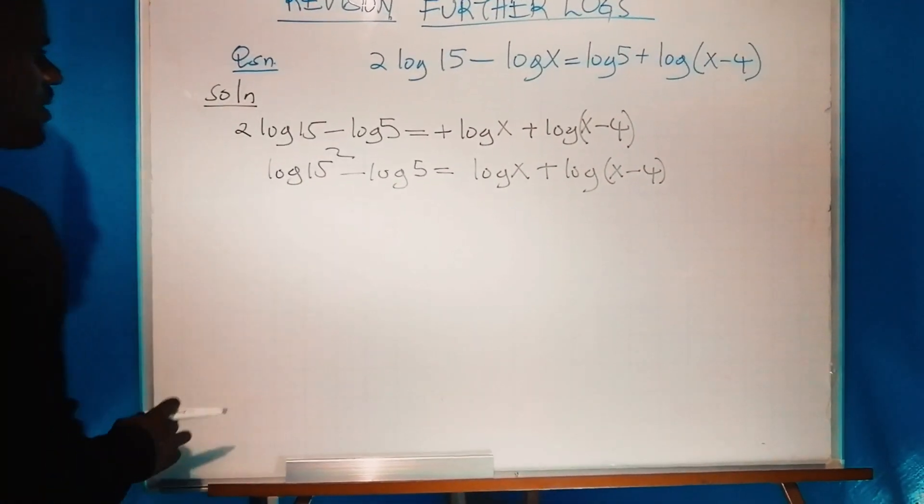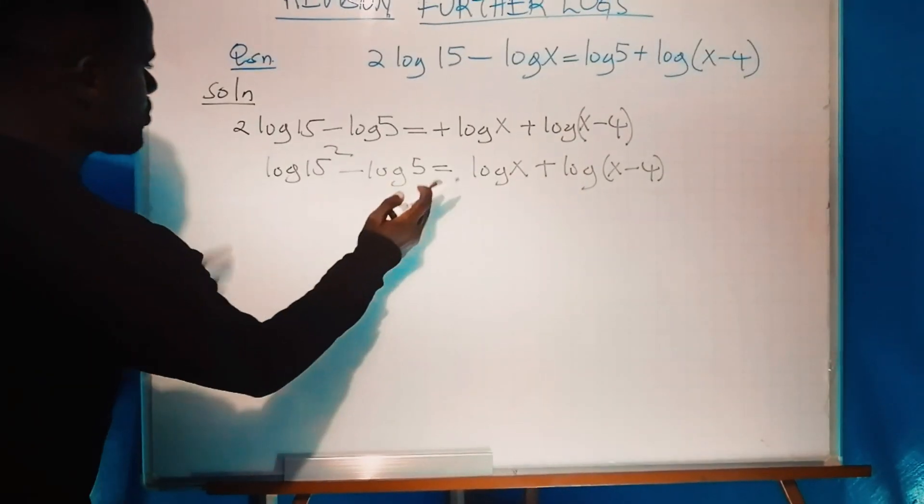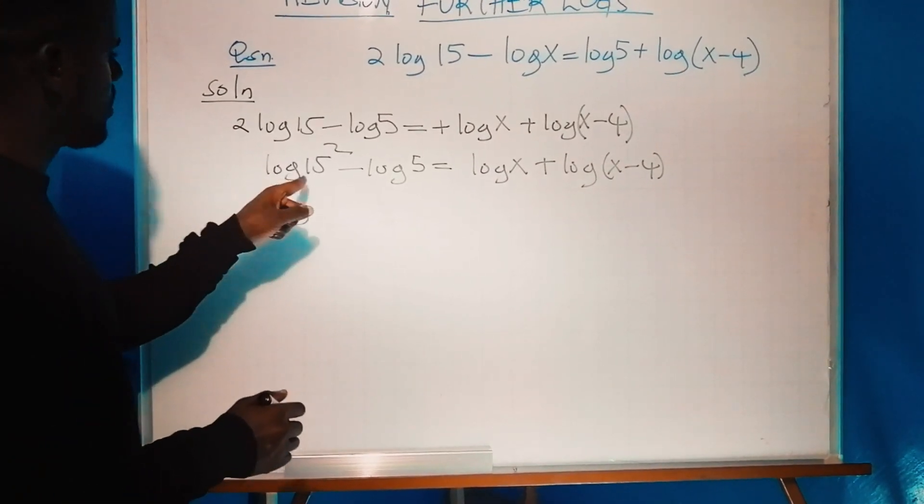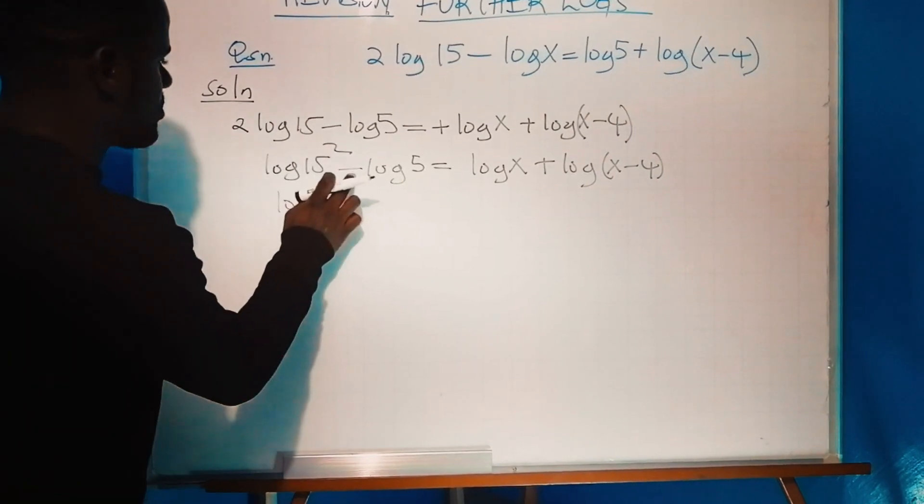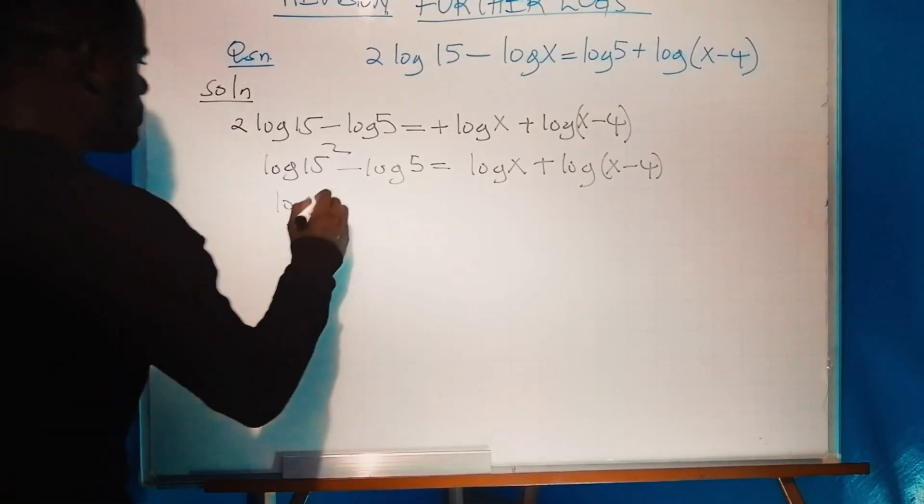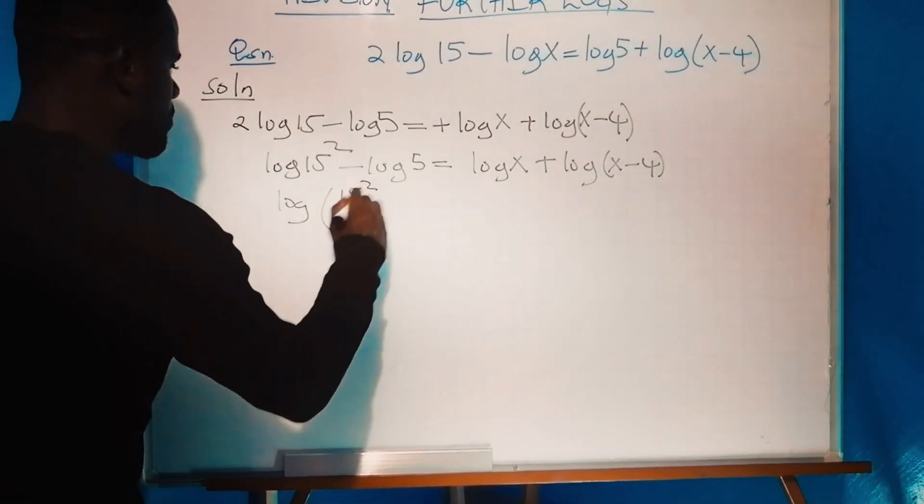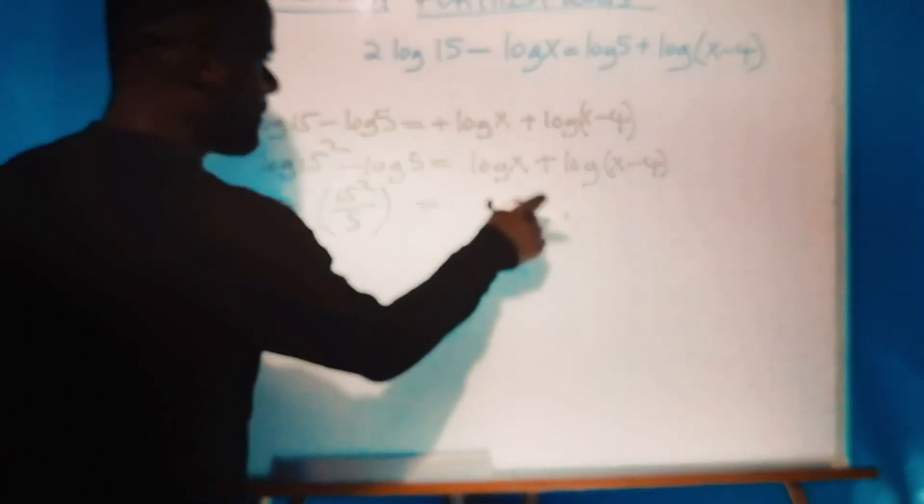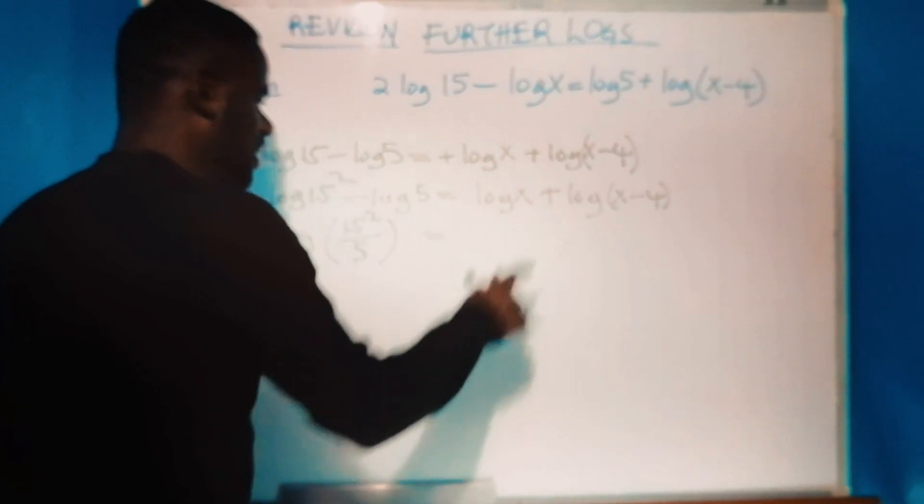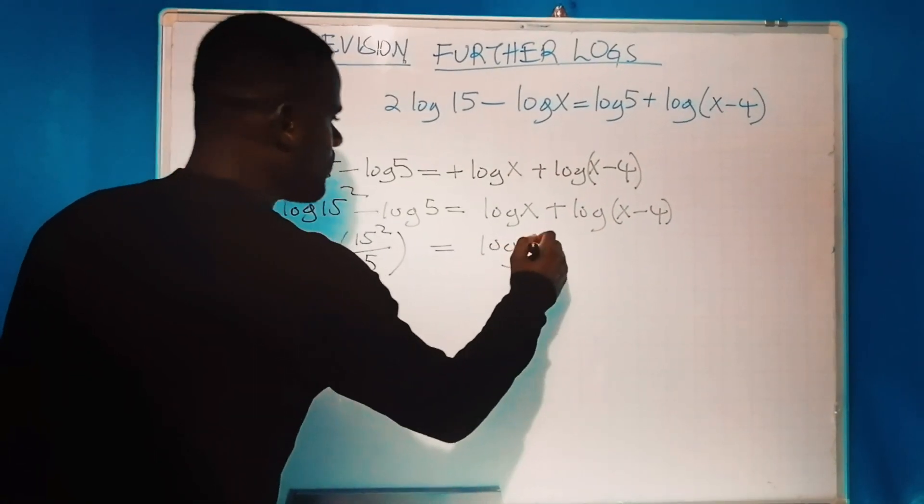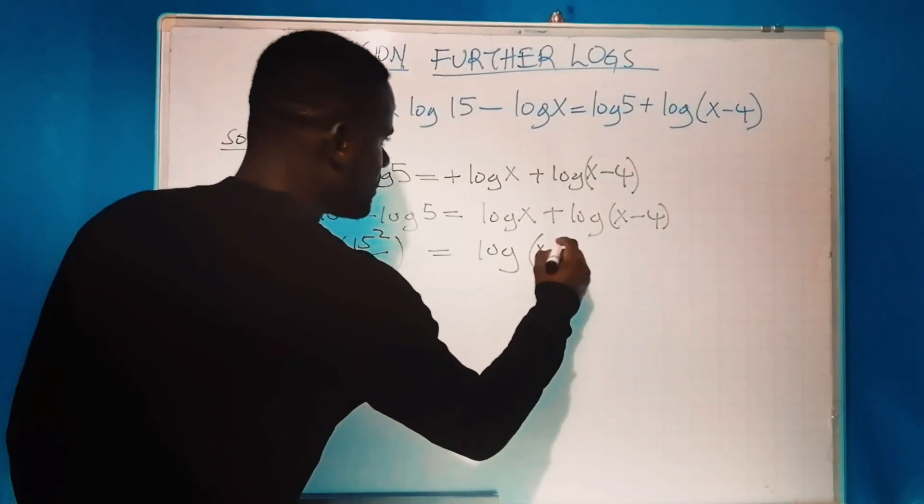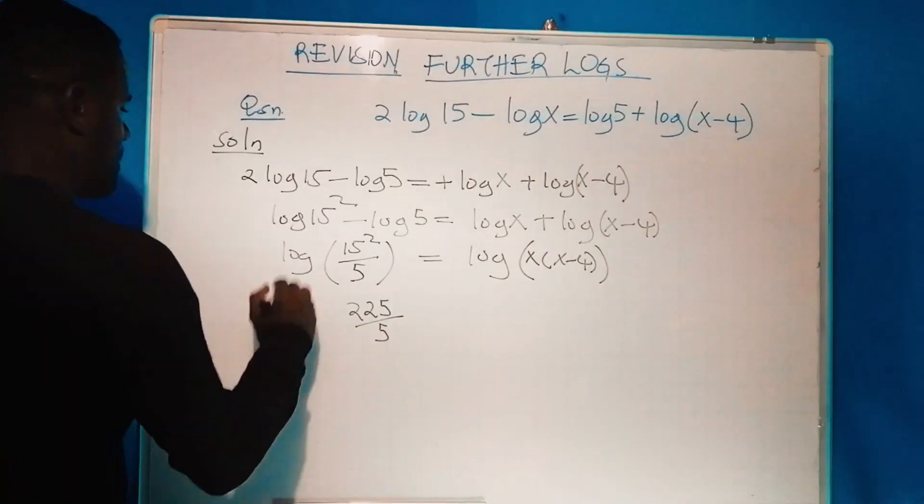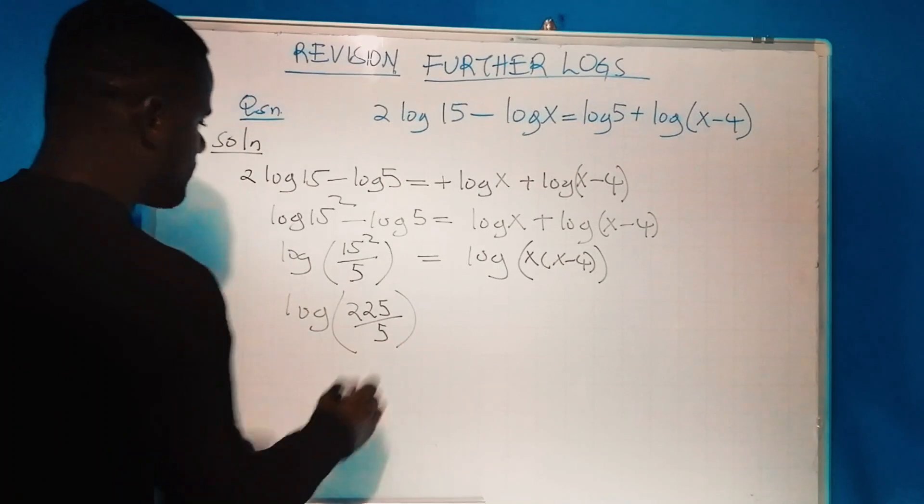Once you're at this point, there's a law that allows me to combine these. That law states that if we have logarithms to the same base with subtraction, this can be written as log(15²/5). The same applies to the other side, but with addition, so we'll have log[x(x - 4)]. Therefore, we have log(225/5) equals log[x(x - 4)]. So 45 equals x² - 4x.